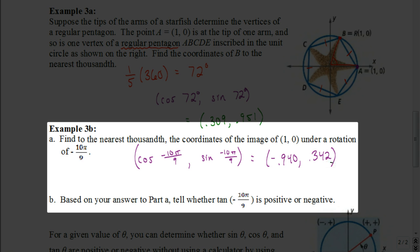So based on your answer to part A, tell whether the tangent of negative 10π over 9 is positive or negative. Well, the fact that the sine value is positive and the cosine value is negative, when we divide those, we're going to have a negative answer.